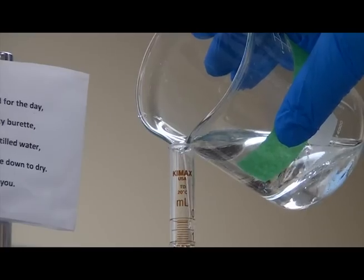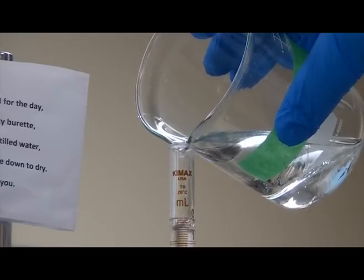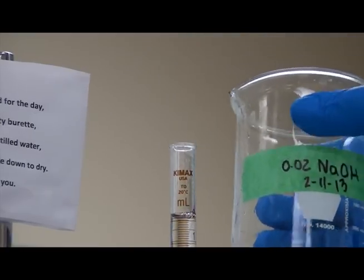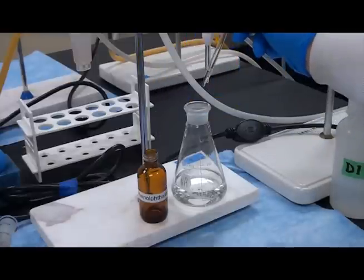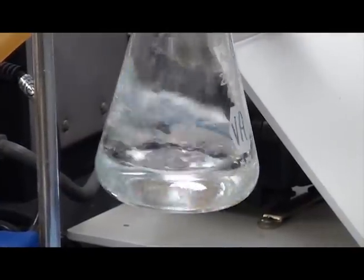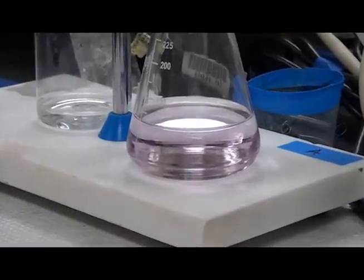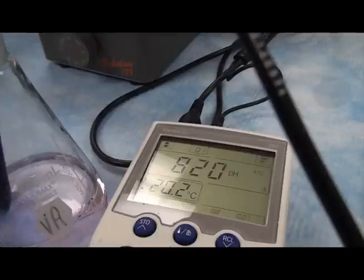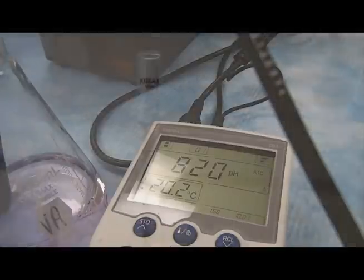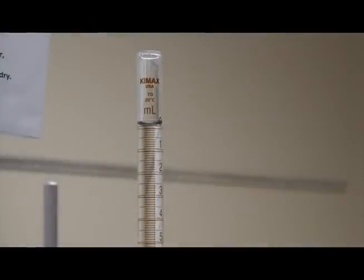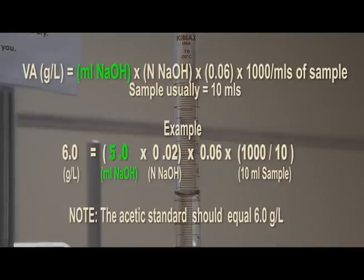Titrate the sample or standard using a 0.02 normalized sodium hydroxide solution. Add three to five drops of phenolphthalein, and the titration endpoint is a very faint pink. A reference check of pH at room temperature should equal approximately 8.2. Be sure to record the starting and end values on the burette, as this gives you the value for the VA calculation.